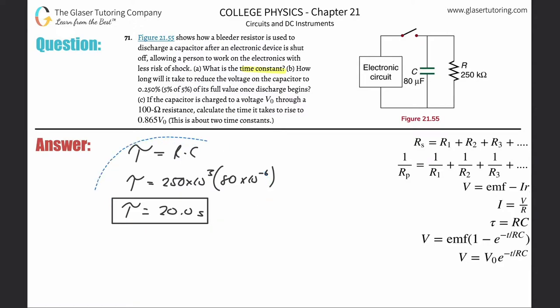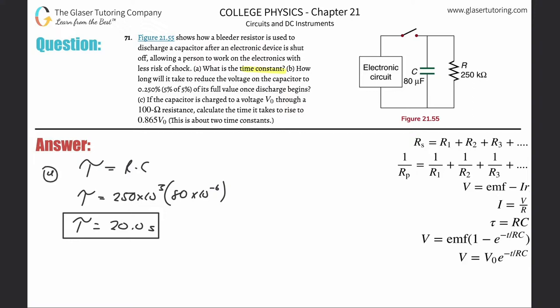Letter B: How long will it take to reduce the voltage on the capacitor to 0.25% of its full value once the discharge begins? There's two formulas we have to consider. The top formula is when the circuit is being charged, and the bottom one is when it's being discharged. So this is an example of a discharge.